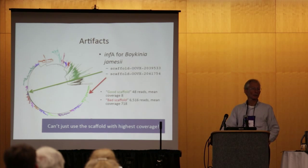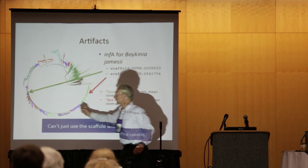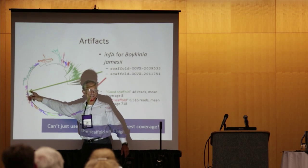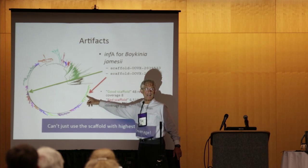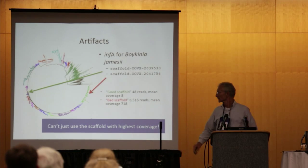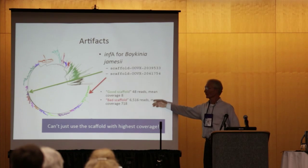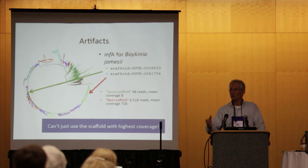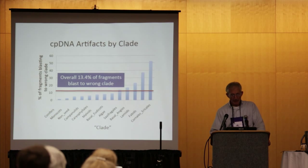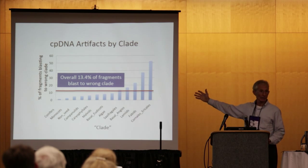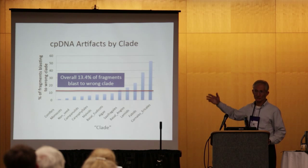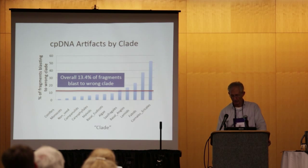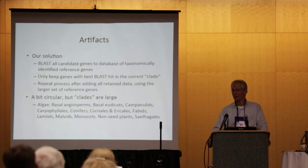Here's the artifact issue briefly. Here's a chloroplast gene for Boykinia, a member of the Saxifragales. The good scaffolds shouldn't be appearing elsewhere — this is the actual placement of that taxon. But there were a lot of bad scaffolds that actually appeared over in the Lamiales, which are asterids. Notice that the good scaffolds were very low in coverage compared to what we'd consider the bad or inappropriate scaffold. So you can't just use the scaffold with the highest coverage when recovering chloroplast genome sequences. This issue varies by clade — for conifers it's not much of an issue, but for some asterids and roses it's quite significant.